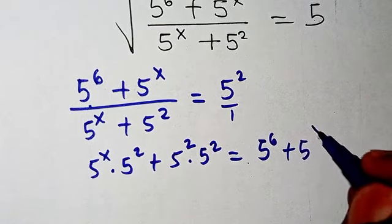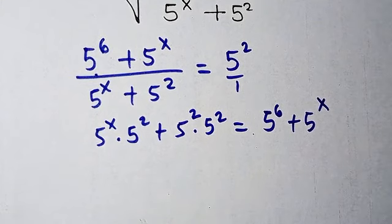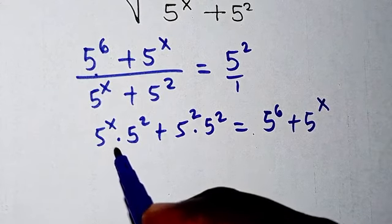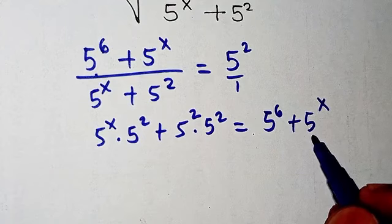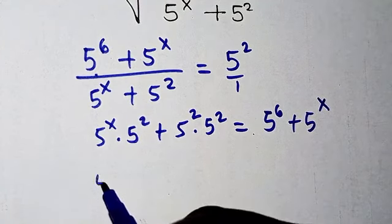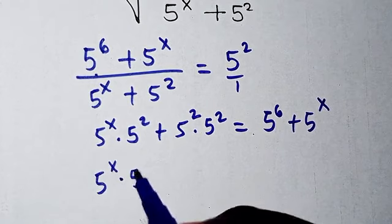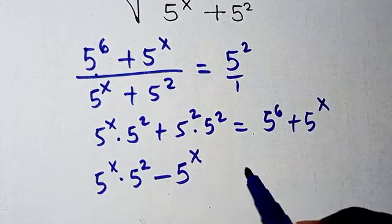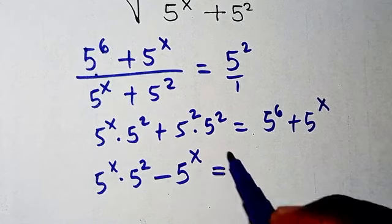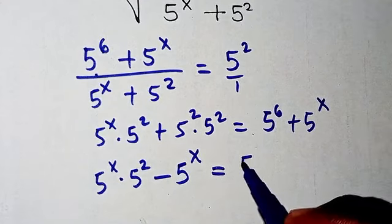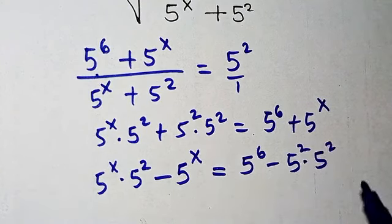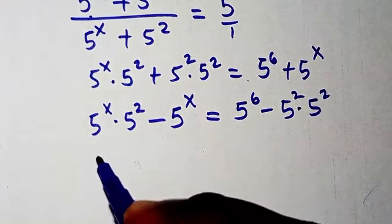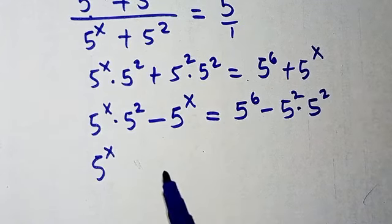Plus 5 to the power of x. Now from here, we can see that these terms are connected by multiplication. So we are going to transpose the 5 to power x from the right-hand side to the left-hand side: 5 to power x times 5 to power 2, minus 5 to the power of x, equals, and I'm going to transpose 5 to power 2 times 5 to power 2 to the right-hand side.